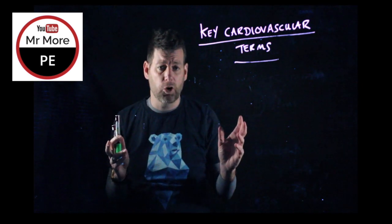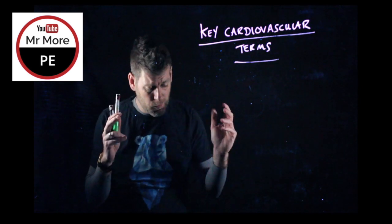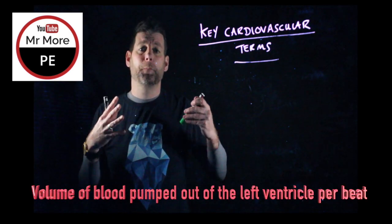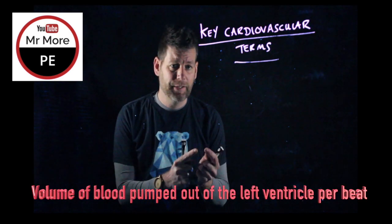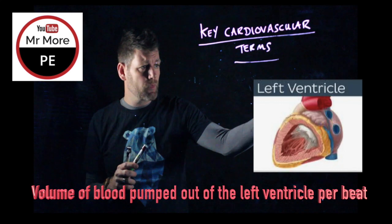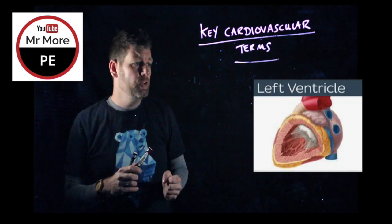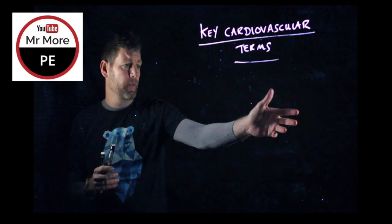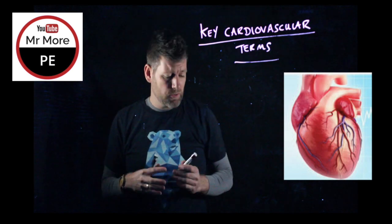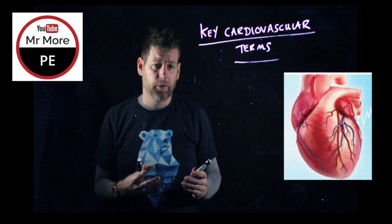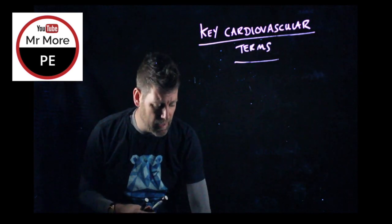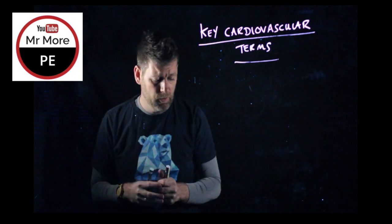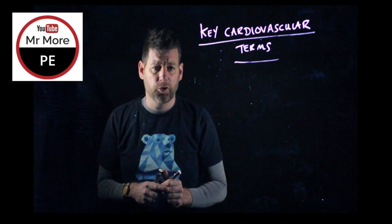So first of all, stroke volume is the volume of blood that's pumped out from the left ventricle per beat. So here's the left ventricle, and you can see a diagram here also of the heart. It's the amount of blood pumped out of that left ventricle per beat — that's the definition you need to know for stroke volume.